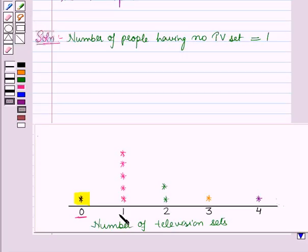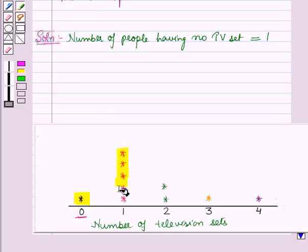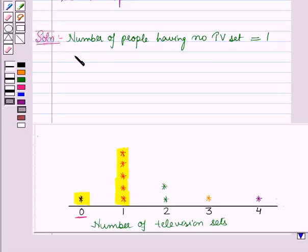The number of people having one TV set is 1, 2, 3, 4, and 5. So the number of people having one TV set is 5.